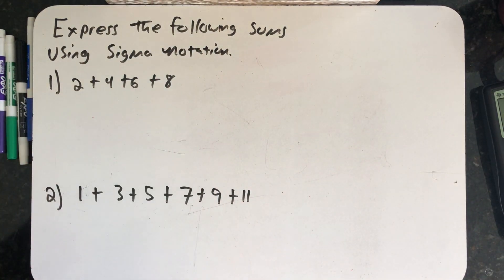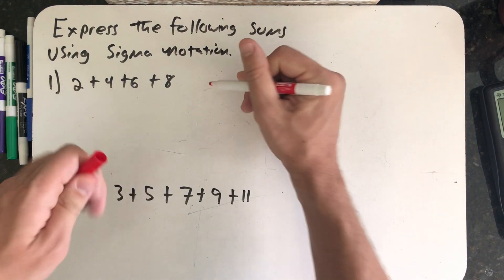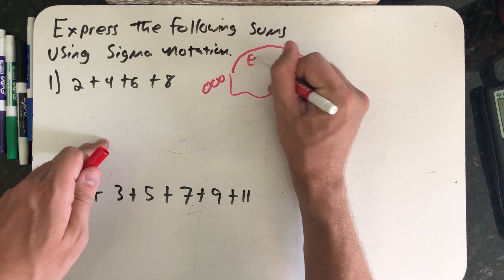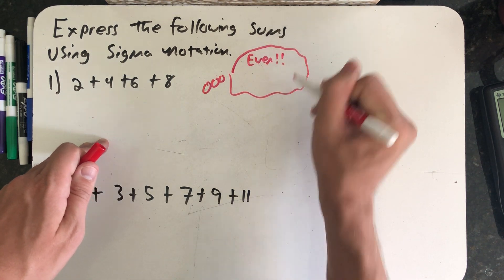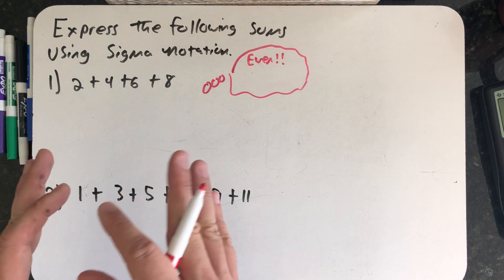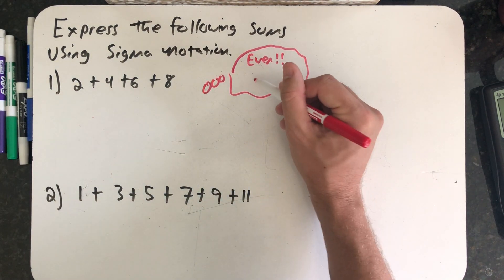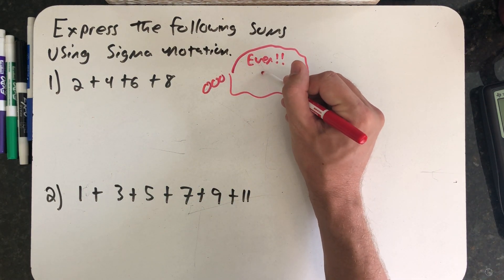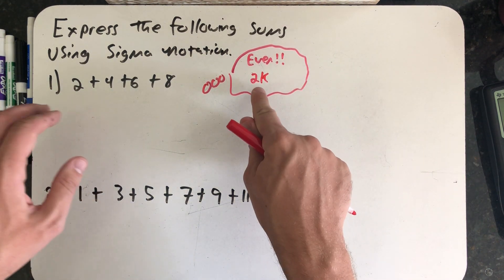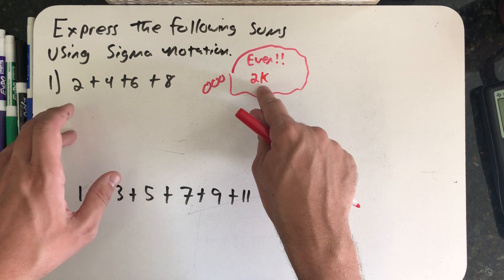In this example I see 2 plus 4 plus 6 plus 8 and I'm thinking that those are all even numbers. So maybe if I just think about what an even number is I'll have some idea of what to do for my kth term formula. And what I remember is an even number is always a multiple of 2, another way of thinking about that is it's always some number times 2.